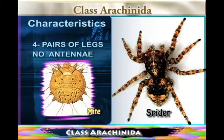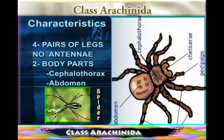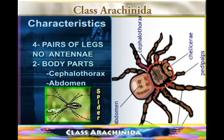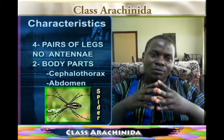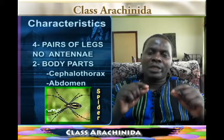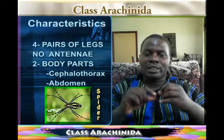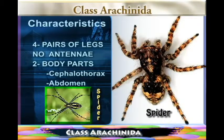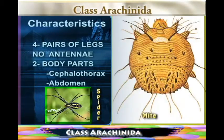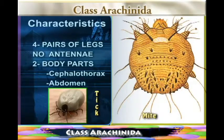When you look at their body sections, the body is divided into two sections. We have the cephalothorax and then the abdomen. Those are the two body sections in the scorpion, the spider, the mites, and the ticks.